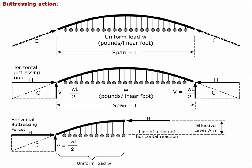The arch in its ideal form should be acting in pure axial compression with no bending moment and no bending shear. This implies that the support force at the end of the arch must be tangent to the direction of the arch. This tangent force has both a vertical component, which handles the gravity force, and a horizontal component which we call the buttressing force.